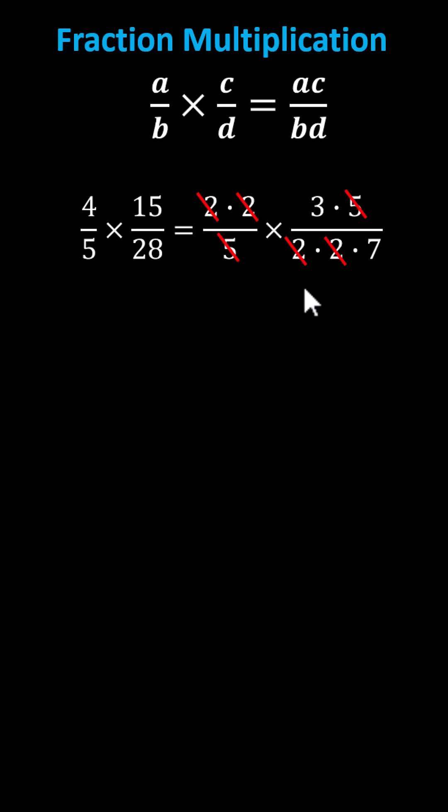And now we can multiply knowing the product will be in simplified form. The product is just 3/7.